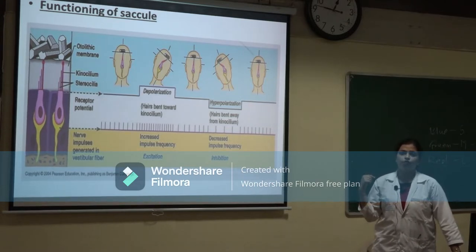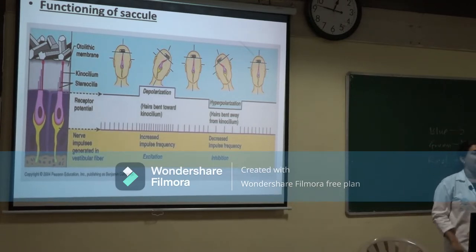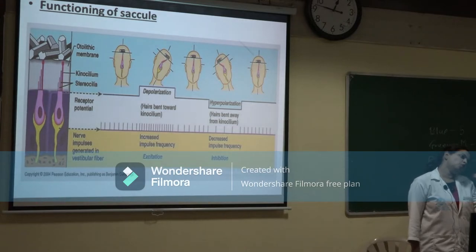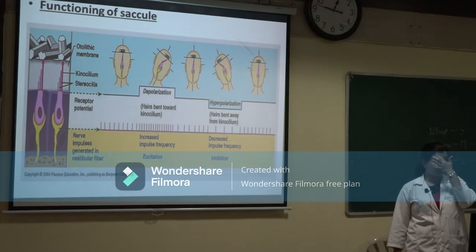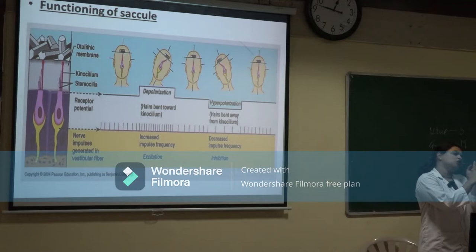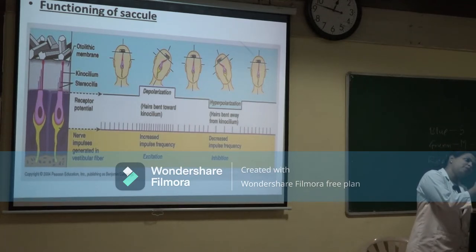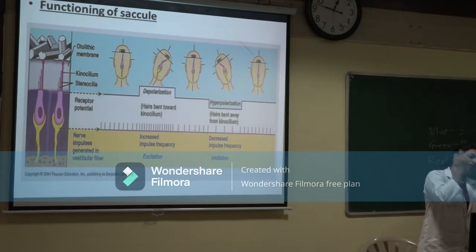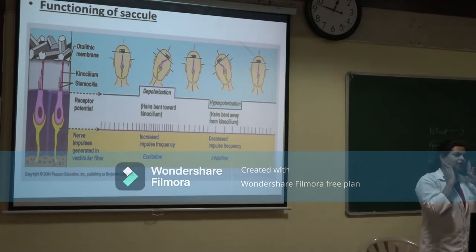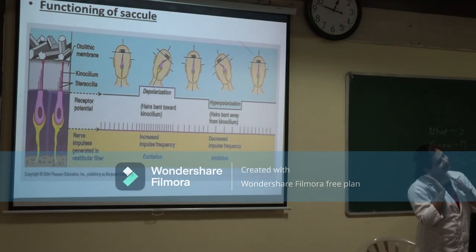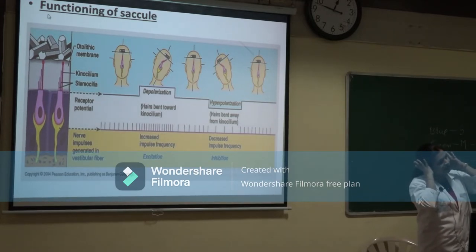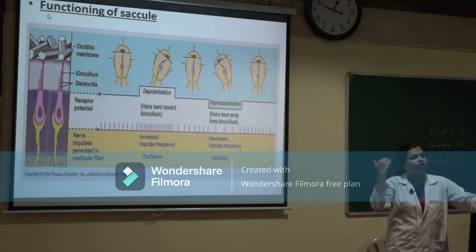The saccule is stimulated during vertical acceleration and when you try to touch your ear to your shoulder. The saccule has a vertical neuroepithelium and horizontal cilia. When you tilt your head, gravity pulls the otoliths, moving the cilia toward the kinocilium on the side you are bending, while the opposite side gets inhibited. The CNS interprets this as the direction of head tilt.